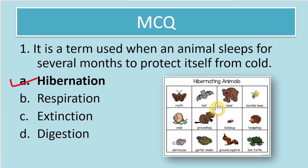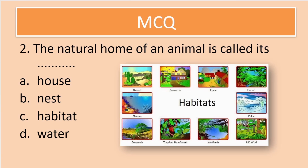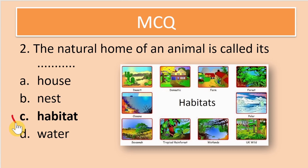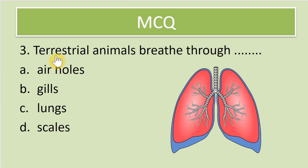The next question is: the natural home of an animal is called its — the options are house, nest, habitat, and water. We call the natural home of an animal its habitat.